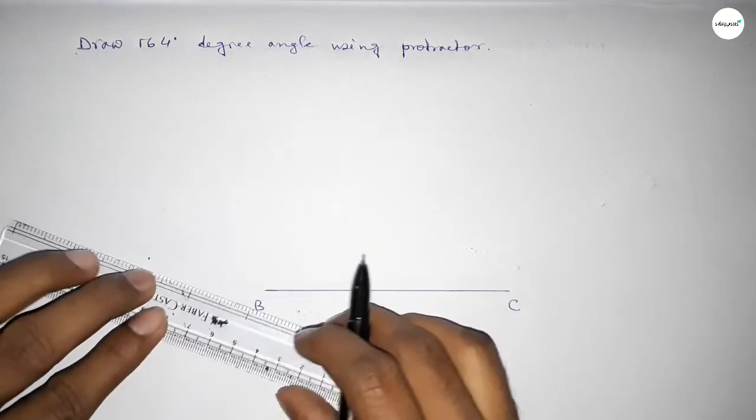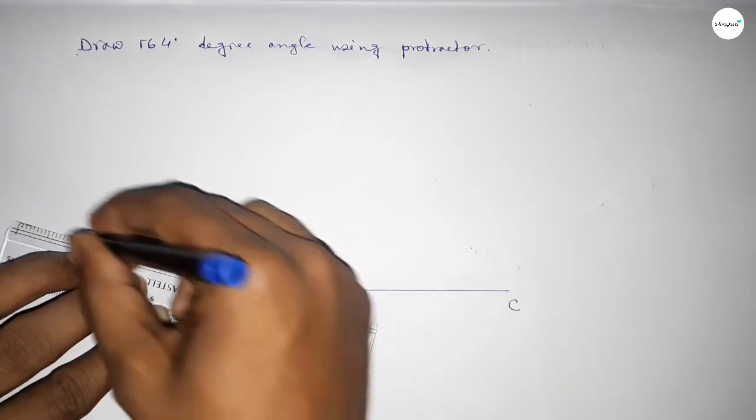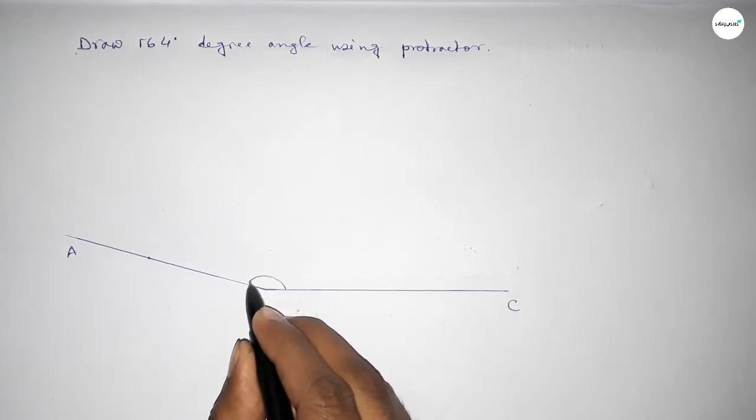So now joining this to get 164 degree angle, and now taking here point A. So angle ABC up to this, this is 164 degree angle.